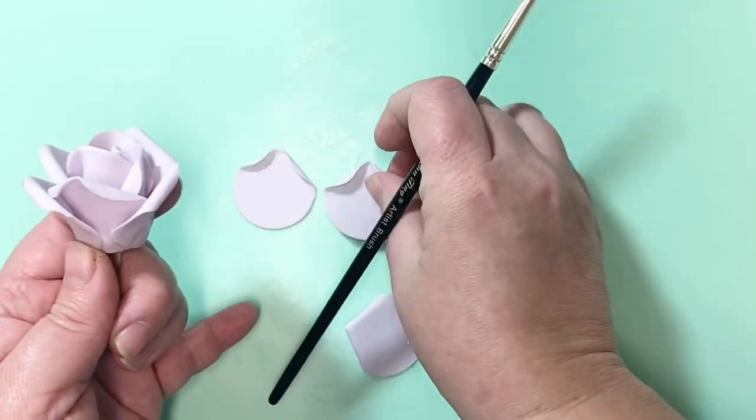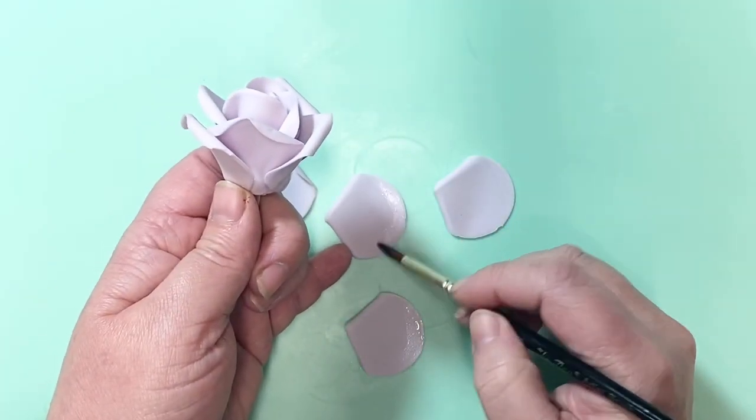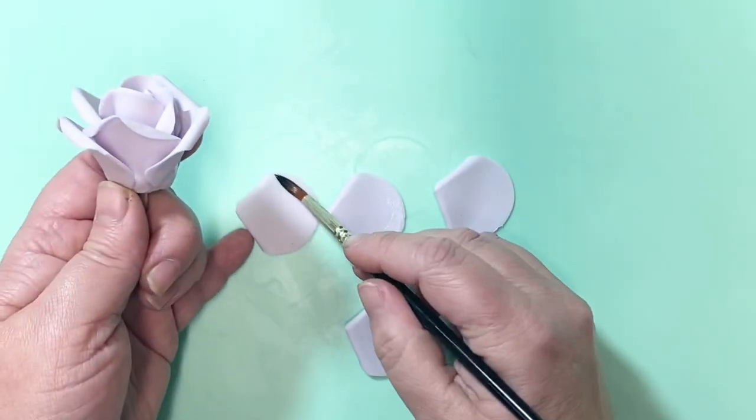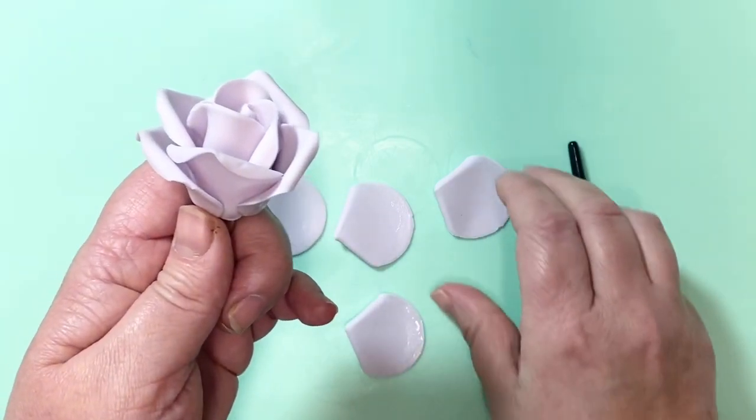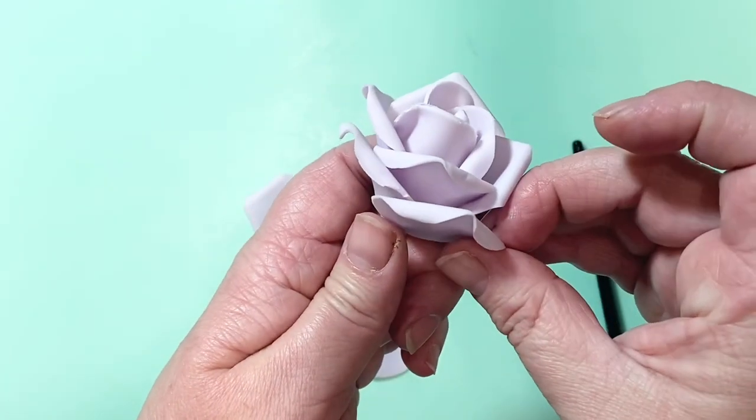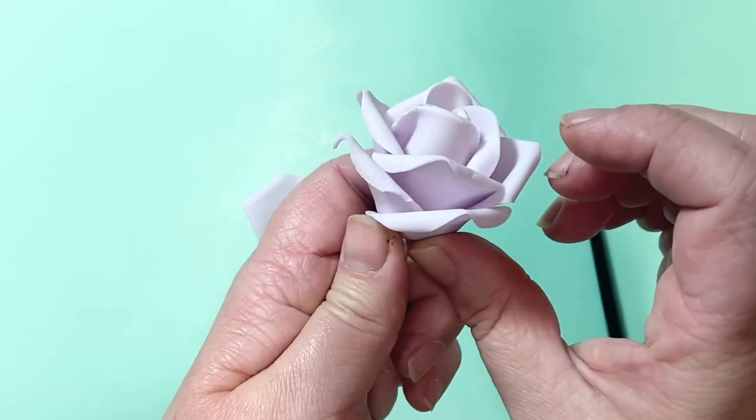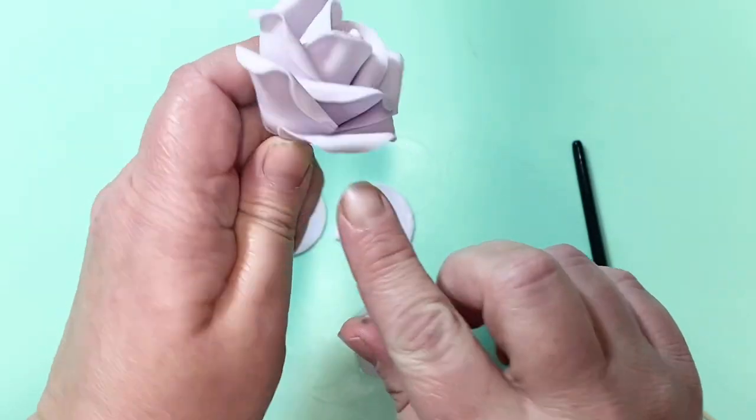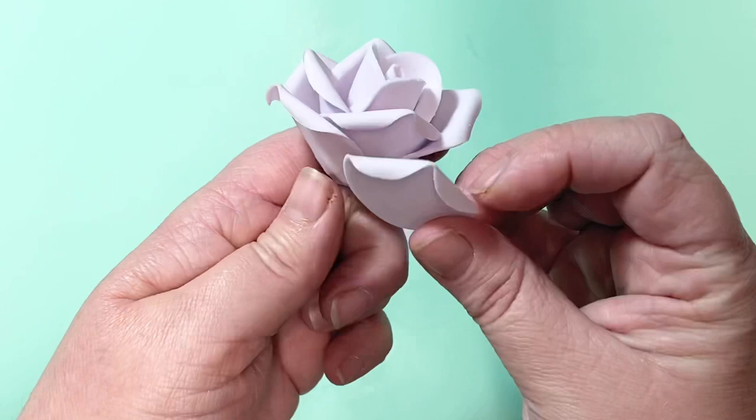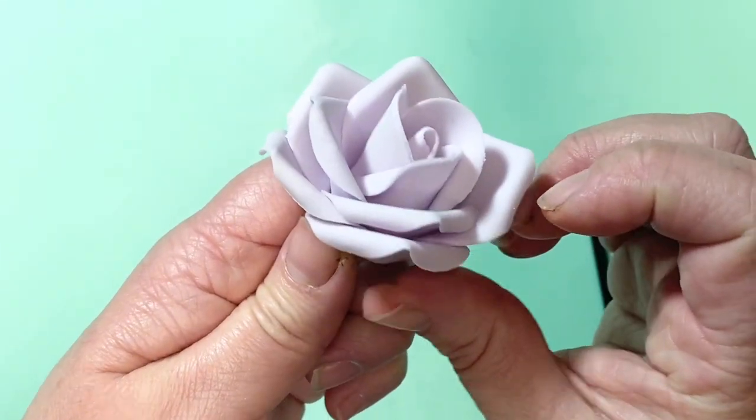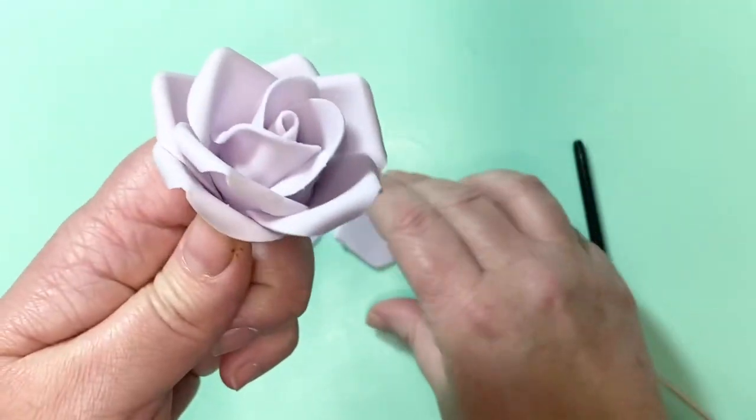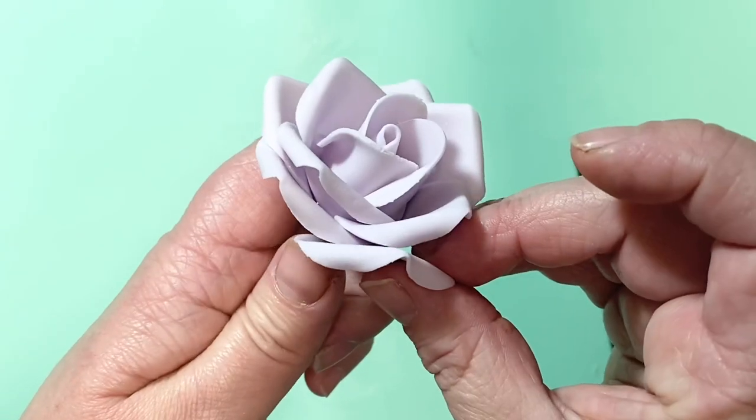So feed your second one over, again leave it to pop out a little bit so it looks like a petal. Third one, fourth petal.